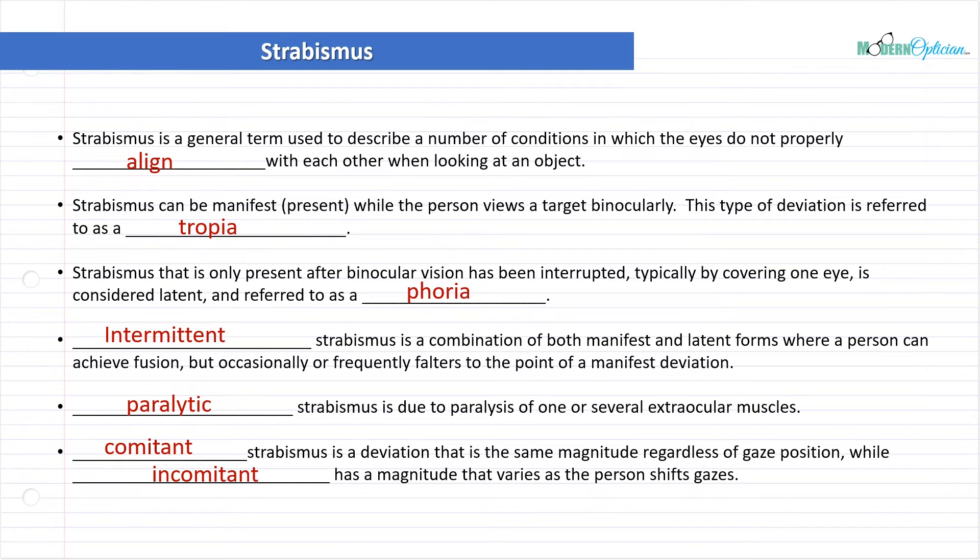This whole slide has been mostly terms. But I wanted you to understand the terms because these are important. I want you to know what a tropia is, what a phoria is. I want you to understand the concept of intermittent, paralytic, as well as comitant and incomitant. These are all important things and they're not complicated. Study this because it is very important to understand. It helps you understand when people are having issues and also understand prism.